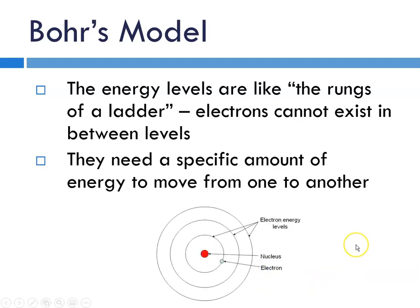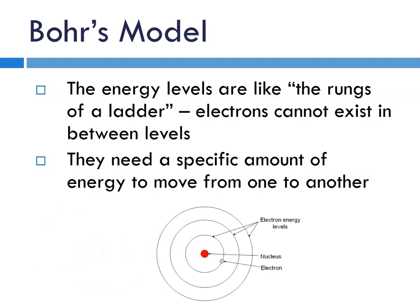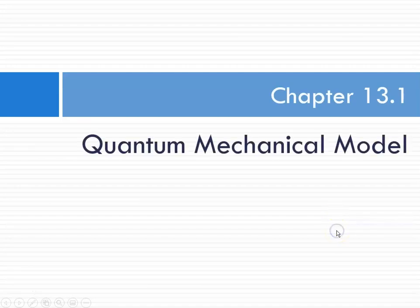And this is what the Bohr model looked like, where you have a nucleus, and then you have these energy levels. And again, the electrons have to be at one of those. And you'll notice that the levels are equally spaced. And that leads us to section 13.1, which is the quantum mechanical model.